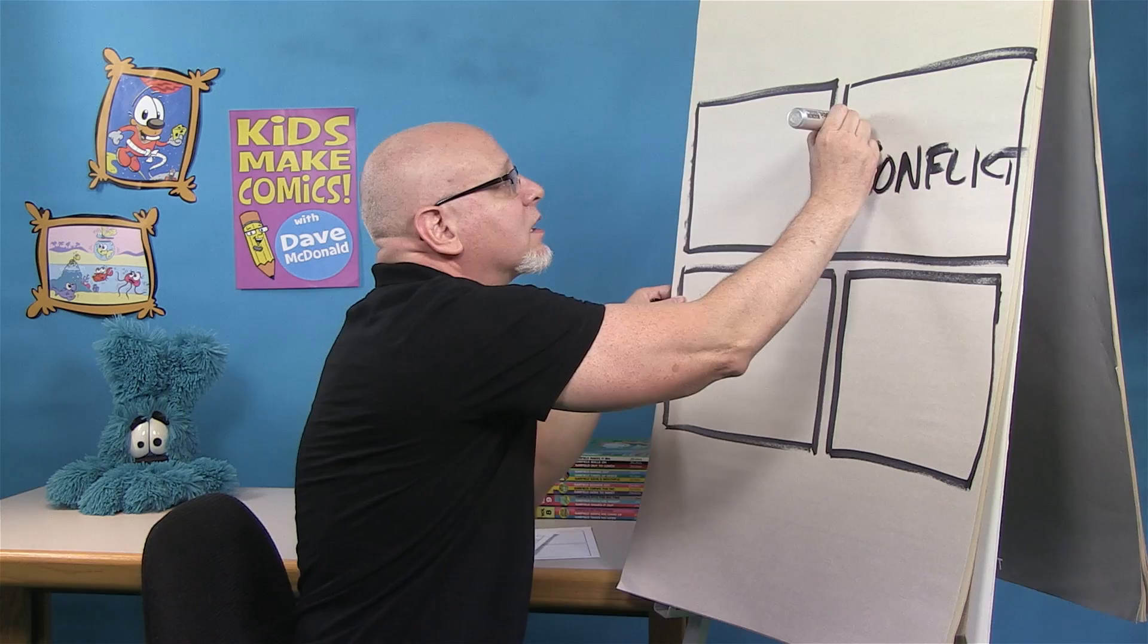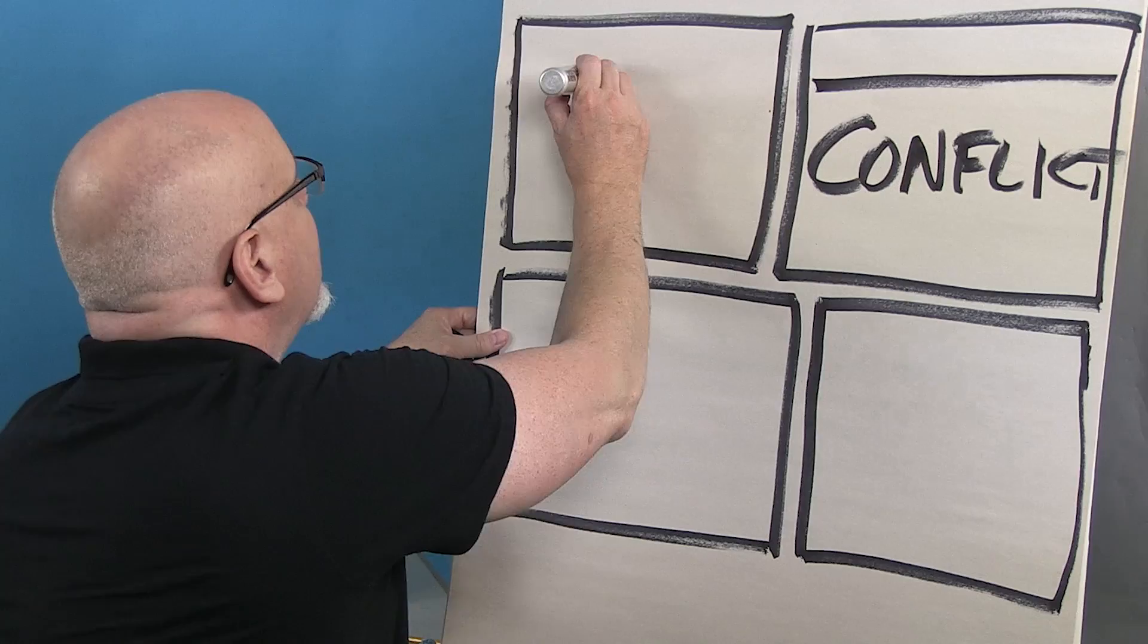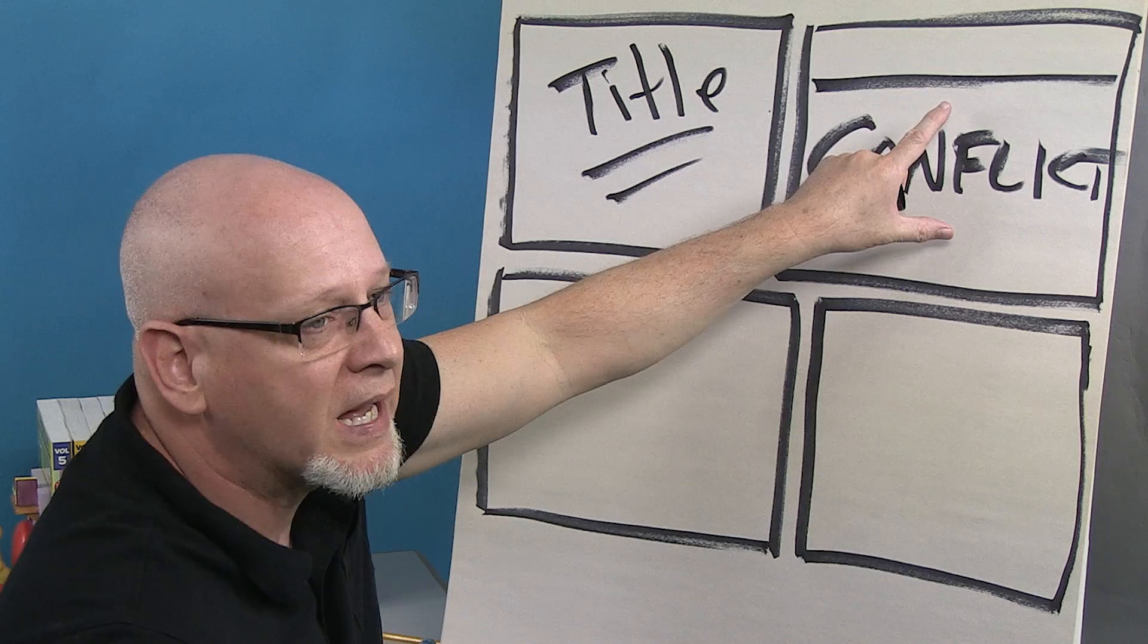And I use that with those narration boxes. Your caption boxes, but I refer to them as narration boxes because it's kind of like the voice of a narrator, helping to tell the story. So we have our title panel here. Introduce our character. Then we start right off the bat with conflict. Hook our reader.